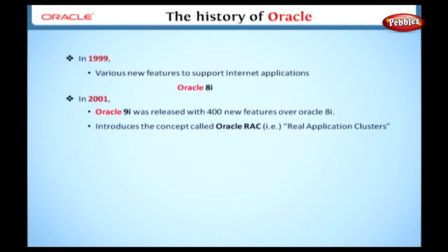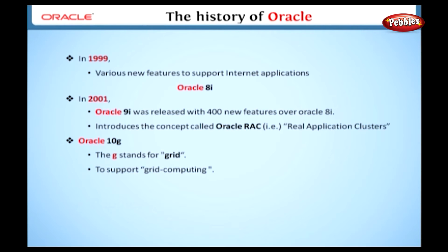After this, Oracle Corporation released Oracle Database 10G. The G stands for Grid. It was developed to support Grid Computing. This version of the database in-builds the Grid Computing features as an extension of clustering, that is, Real Application Clusters. It also has new features in data warehousing.